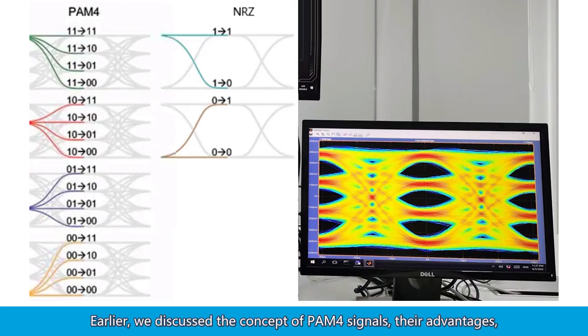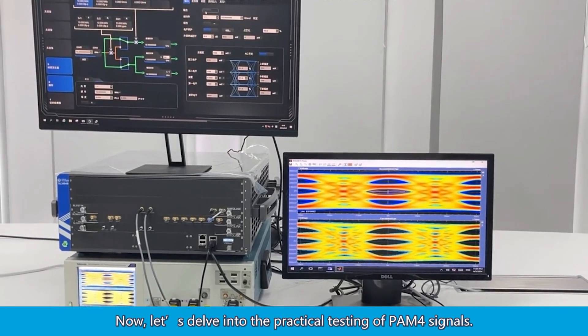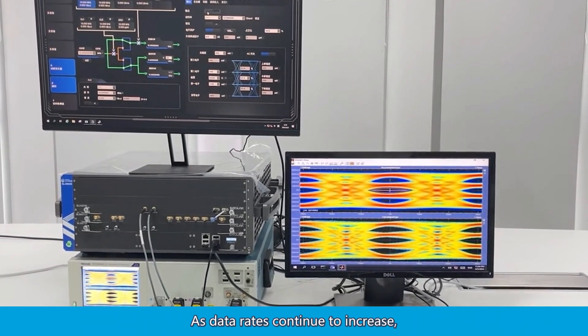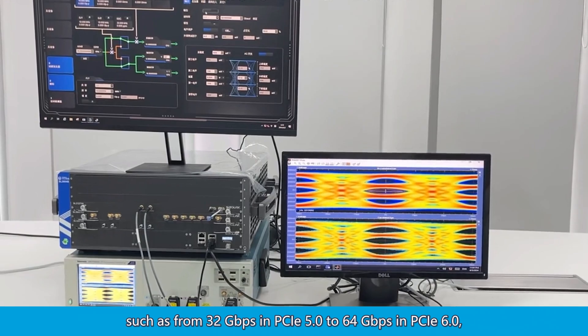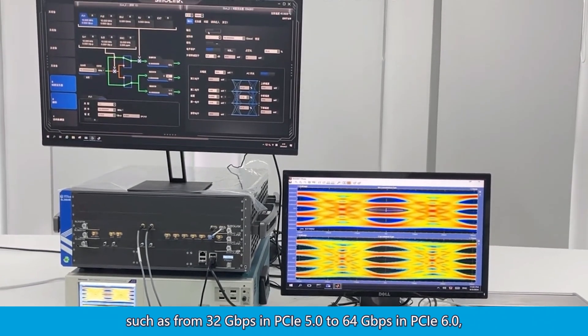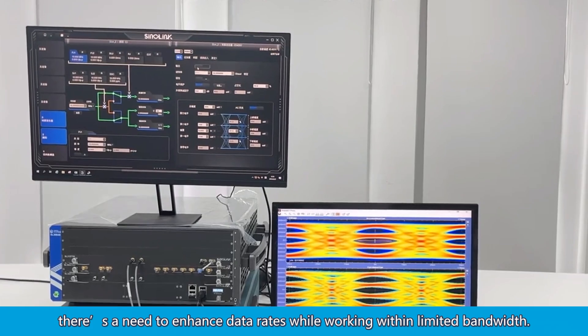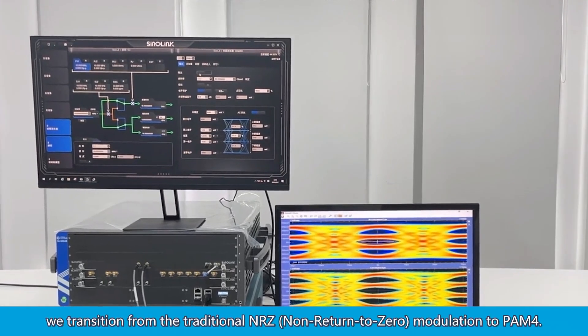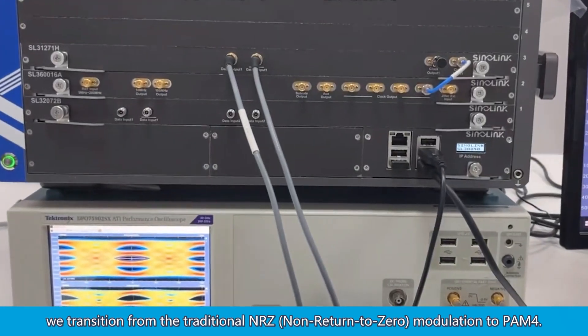Earlier, we discussed the concept of PAM-4 signals, their advantages, and their application scenarios. Now, let's delve into the practical testing of PAM-4 signals. As data rates continue to increase, such as from 32 gigabits per second in PCIe 5.0 to 64 gigabits per second in PCIe 6.0, there's a need to enhance data rates while working within limited bandwidth. To achieve this, we transition from the traditional NRZ, non-return to zero, modulation to PAM-4.